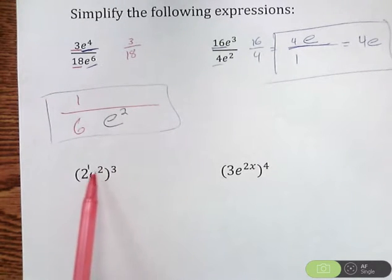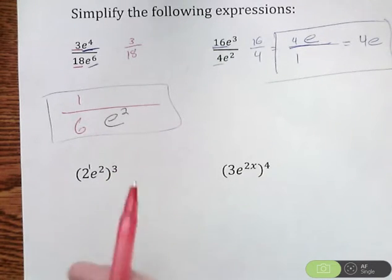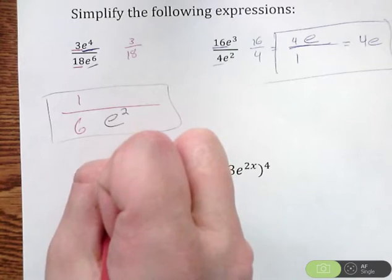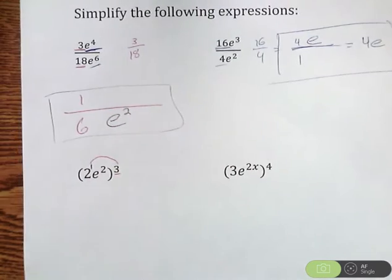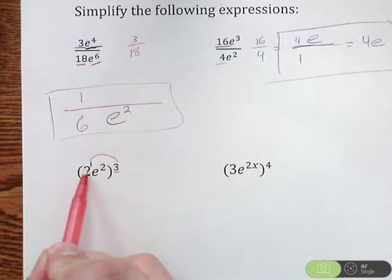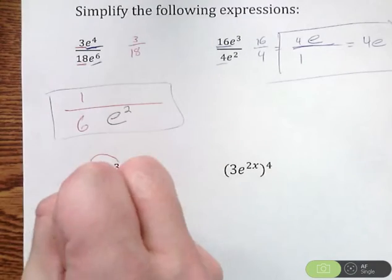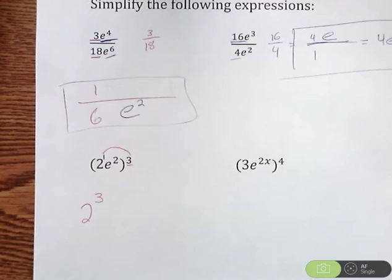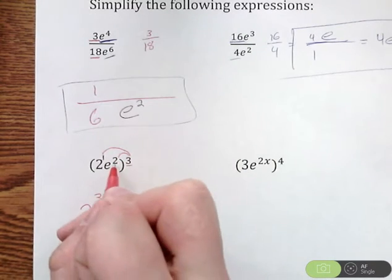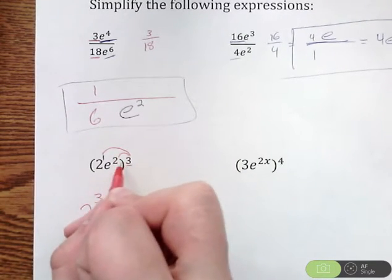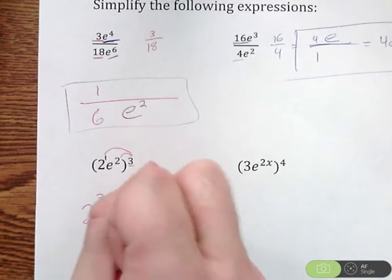Now when we have exponents inside raised to an exponent on the outside of parentheses, to cross through that parentheses, we're going to multiply. So this 3 is going to be multiplied by that 1. This exponent is going to apply to all exponents on the inside. So 3 times 1 is 3. We're going to have 2 to the third power. But this exponent also needs to go to this other exponent here. So e squared, 2 times 3, since we're going through parentheses, multiply. 2 times 3 is 6.